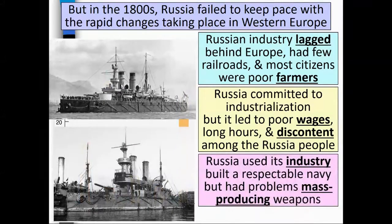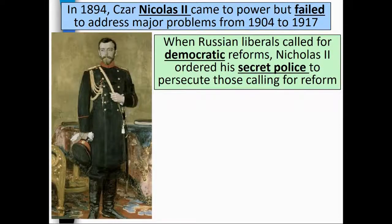Russia used its industry and built a respectable navy, but had problems mass-producing weapons. In 1894, Tsar Nicholas II came to power, but failed to address major problems from 1904 to 1917.